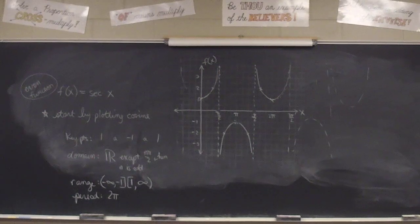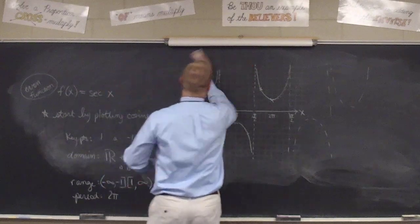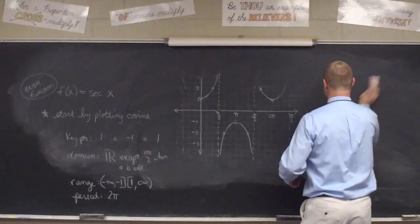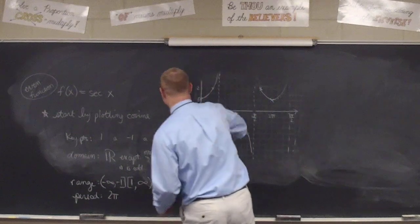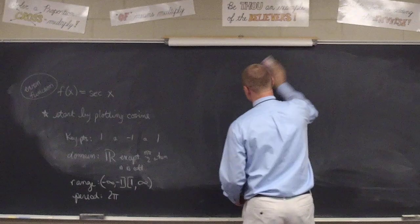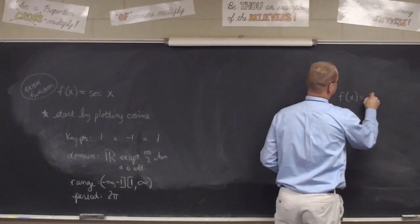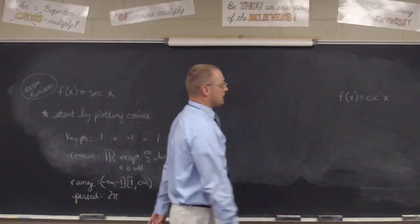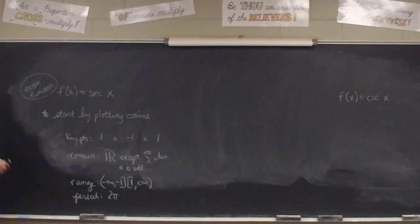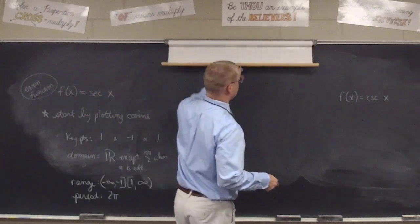Any questions on the secant curve? Next up is cosecant: f(x) = csc(x). To help visualize this graph, we start with sine — just like we used cosine to graph secant. Let's plot the sine curve lightly. The sine curve starts at zero, goes up to one, back down to zero, down to negative one, and back up to zero.